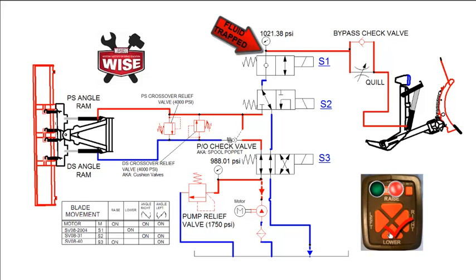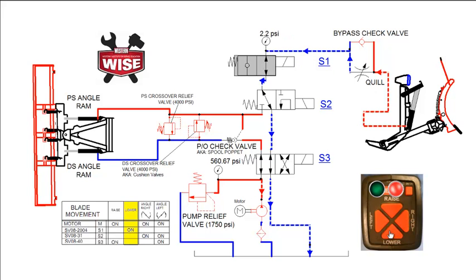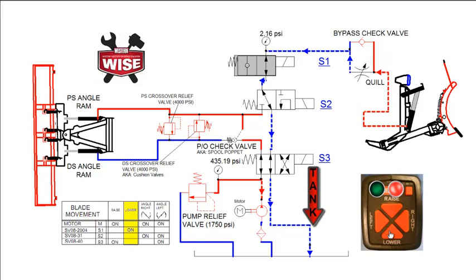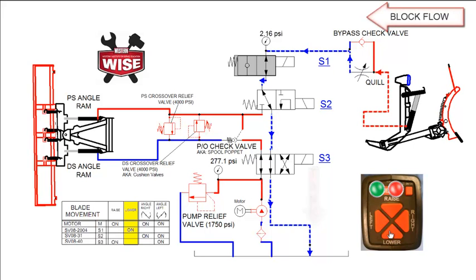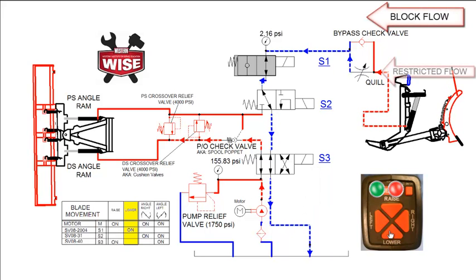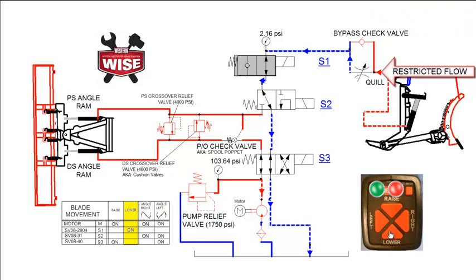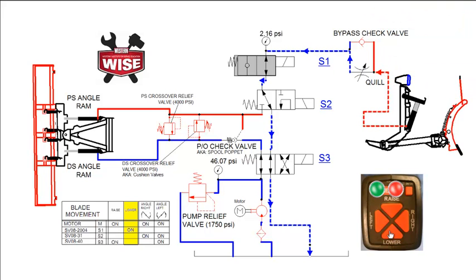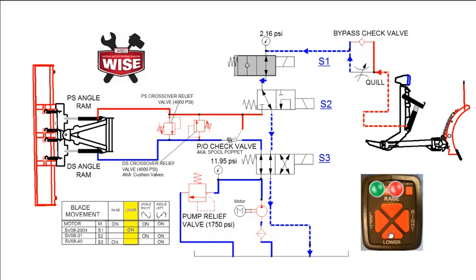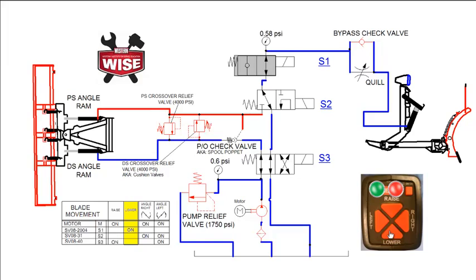Pushing the lower button on the control shifts the S1 cartridge, giving the high pressure fluid a pathway back to tank. The return fluid pushes the check valve against its seat, forcing fluid through the quill on its way back to tank. Using the check valve in this circuit allows us to control the drop rate of the plow without adding to the amp draw in the raised circuit by bypassing the quill.